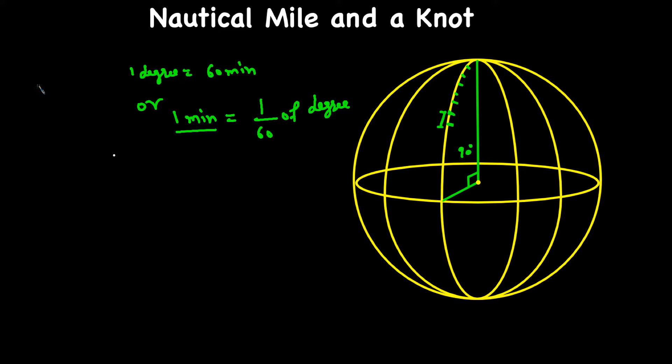One nautical mile, if we look into meters, one nautical mile is equal to 1,852 meters, which is equal to 1.852 kilometers.